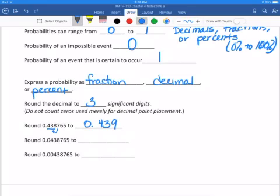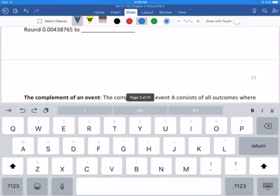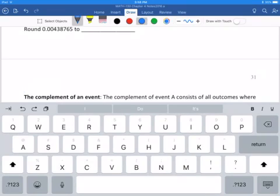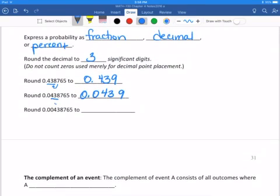So this next number, we have zero point zero four three eight seven six five. This zero, we don't count as significant digits. We look at these three again, that seven would bump up the eight. So it'd be zero point zero four three nine. And same thing here. Those first two zeros don't count as significant digits. This would be zero point zero zero four three nine.